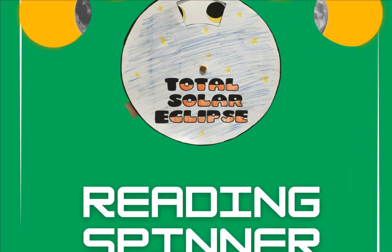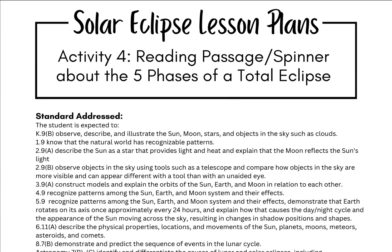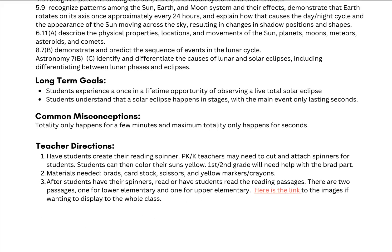Starting off, like we have with each of these activities and lessons, you have your standards that will be addressed — everything from kinder all the way through high school astronomy. Then you have your long-term goals: what you want students to experience and understand, as well as any misconceptions that might arise during the eclipse. We know there will be several, since students have not experienced a total eclipse before. Then looking at your teacher directions...